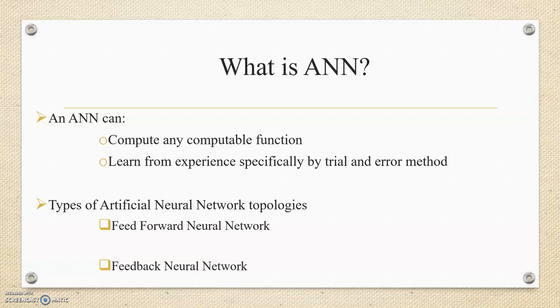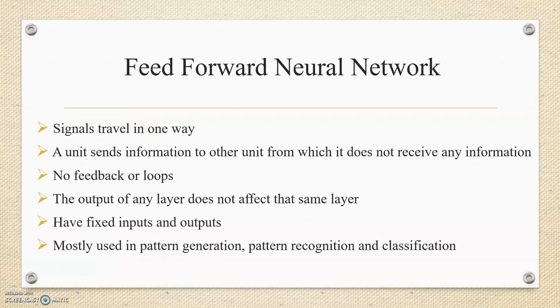There are two types of Artificial Neural Network topologies: Feed Forward Neural Network and Feedback Neural Network. Let's get started with the first type, Feed Forward Neural Network.